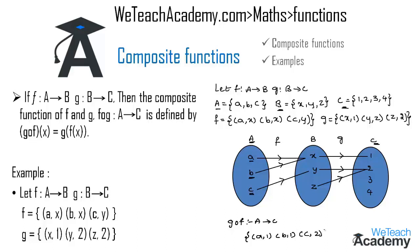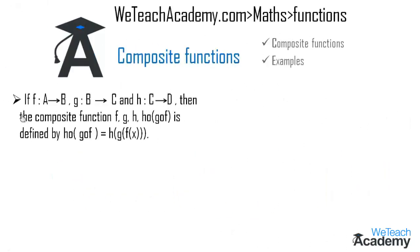Now let us learn the definition of a composite function when three functions f, g, and h are given. If f is a function from A to B, g is a function from B to C, and h is a function from C to D, then the composite function h∘g∘f is defined by h∘g∘f(x) = h(g(f(x))).